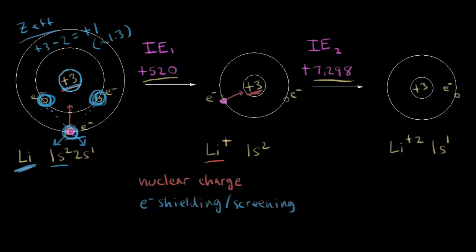When we move to the electron in the lithium +1 cation, it's not the same situation — there isn't much electron shielding. The other 1s electron might repel it a little bit, but there are no inner shell electrons repelling this electron. Because of that, the electron is going to feel much more of the full positive three charge of the nucleus, so there's going to be a much greater attractive force holding this electron to the nucleus. Therefore, you'd have to apply more energy to pull it away. The effect of electron shielding tells us the second electron is much harder to remove than the first, which is why we see a large increase in ionization energy.